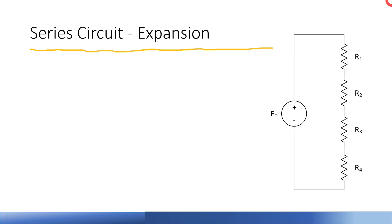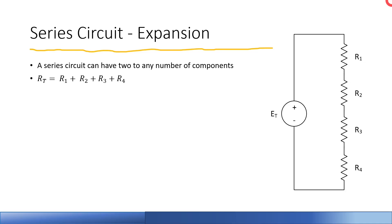We are going to expand to a four-resistor circuit here. The series circuit can have any number of components in it — I'm just showing four, but it could have significantly more. Our total resistance is still calculated by adding up all the resistances. Resistance is additive in a series circuit, so you add on a resistor and just add that value to get total resistance.